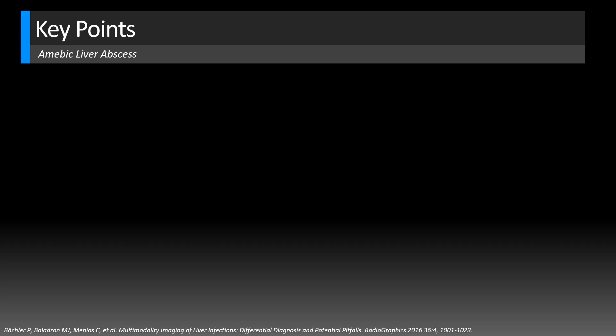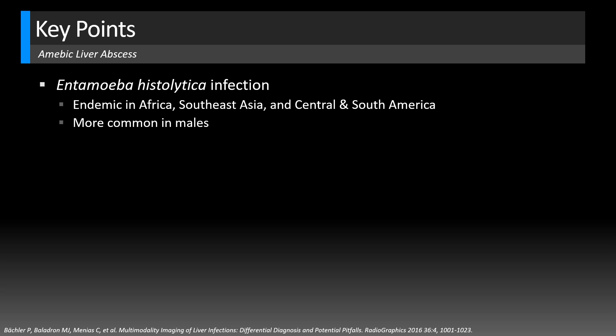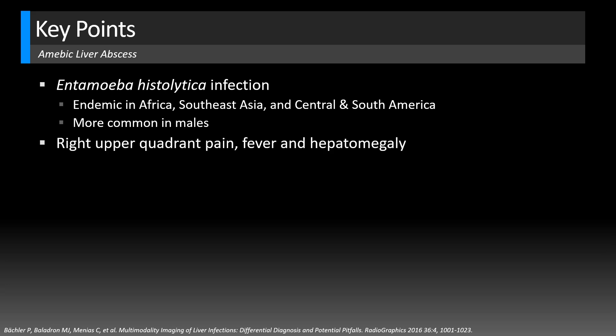Let's look at some key points for amoebic liver abscess, also included in the show notes. This is caused by an Entamoeba histolytica infection, which is endemic in Africa, Southeast Asia, and Central and South America. It's more common in males, about a 10-to-1 male-to-female ratio. These patients often present with right upper quadrant pain, fever, hepatomegaly, and even cough if the abscess is subdiaphragmatic in location.